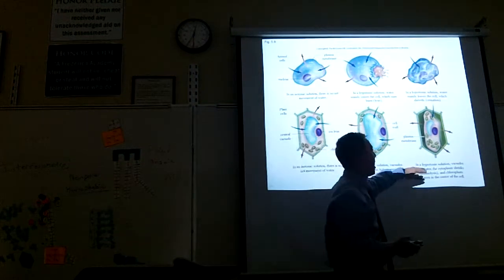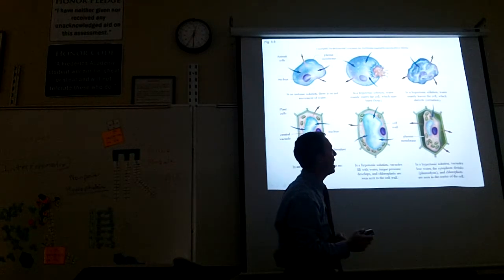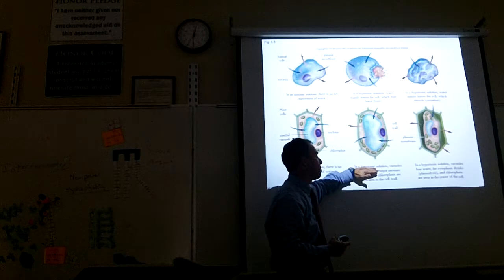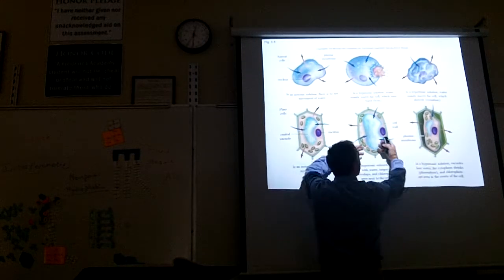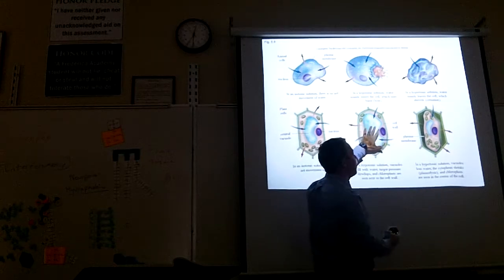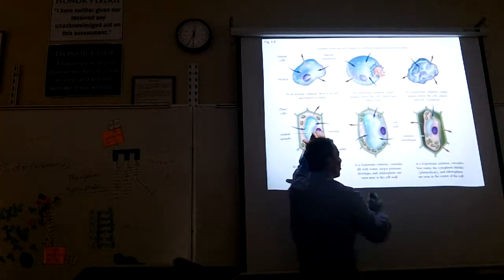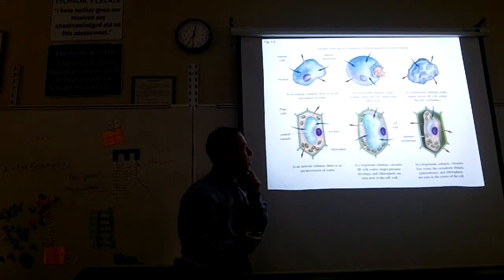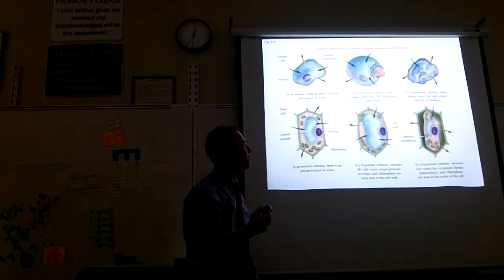If you put a cell in a hypertonic solution, it'll shrink — both plant cells and animal cells will shrink. If you put a cell in a hypotonic solution — one that's almost pure water — water is going to rush into the cell because the cell is hypertonic compared to the solution. The cell will blow up with water. Plant cells can handle that because they have a tough cell wall that keeps them from exploding, but an animal cell will just explode.